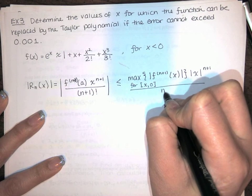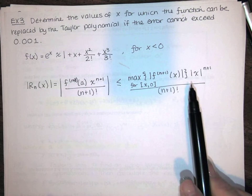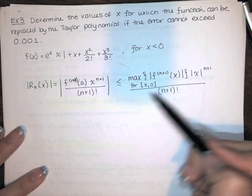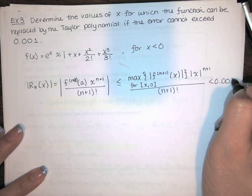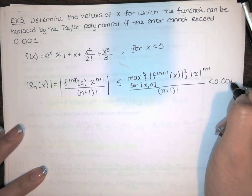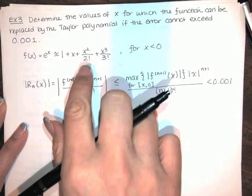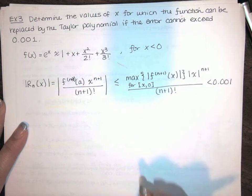That should be factorial. Now in order to evaluate this, we need this maximum error to be less than 0.001. In order to find the values of x for which the function can be approximated by this Taylor polynomial, we've got to solve this inequality for x.